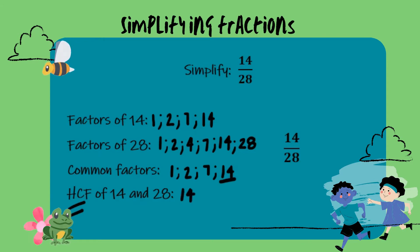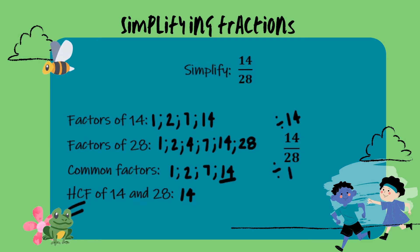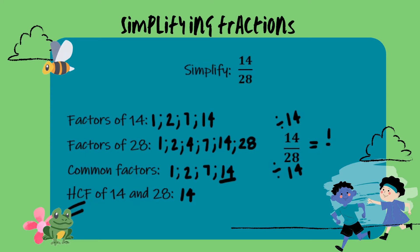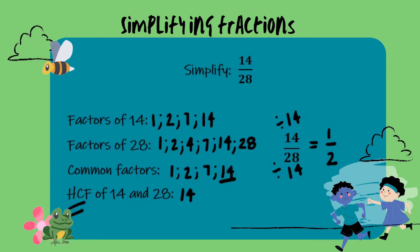Therefore we go to our fraction and divide both the numerator and the denominator by 14. 14 divided by 14 is 1 and 28 divided by 14 is 2. The simplified version of 14 over 28 is now equal to one half.